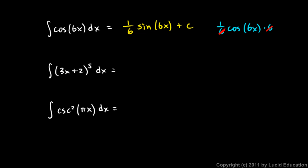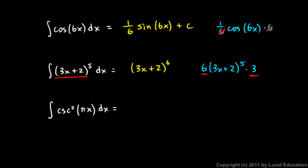The next example: the integral of (3x + 2)⁵. When we integrate, the power goes up by 1, so let's try (3x + 2)⁶. When we differentiate that, we get 6 times (3x + 2)⁵ times the derivative of the inner function, which is 3 — giving a factor of 18. So differentiating this gives us 18 times what we want. We need to get rid of that factor of 18.